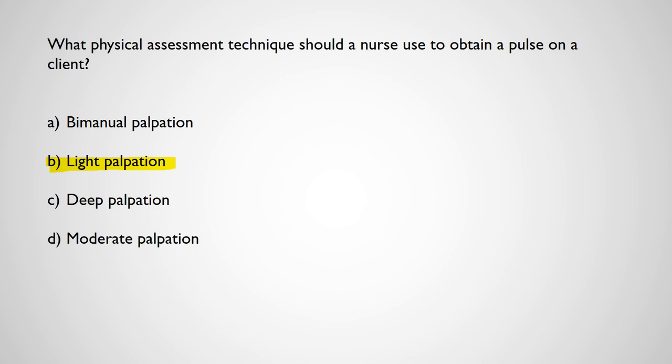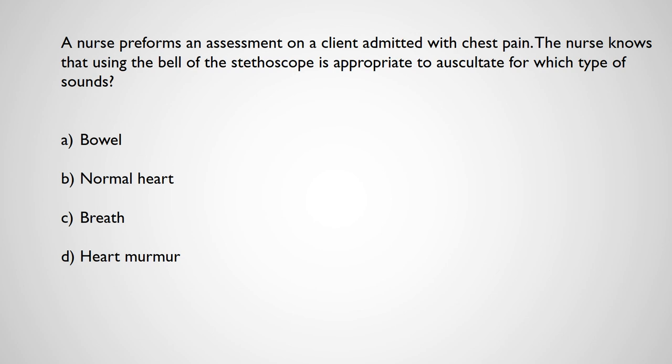A nurse performing an assessment on a client with chest pain — using the bell of the stethoscope is appropriate to auscultate for which sounds: bowel sounds, normal heart sounds, breath sounds, or heart murmurs? The bell picks up low-pitched sounds, so that's heart murmurs and any extra or adventitious sounds. The diaphragm picks up high-pitched sounds — normal heart sounds, breath sounds, and bowel sounds.